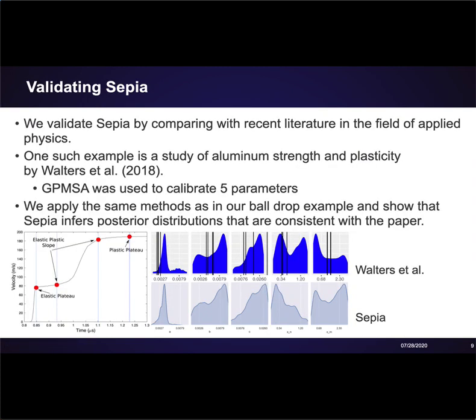While our example shows how well sepia can perform in a simple, one-parameter setting, we would like to be confident of its performance in a more realistic setting with more parameters. We apply the same methodology to a study of aluminum strength and plasticity. In the bottom left plot, we see that the data consists of four velocity-time pairs. The technical details of the data are beyond the scope of this talk, but it's worthwhile to see the structure. The data was analyzed by Walters et al. using GPMSA. This early result of sepia does a reasonably good job at reproducing the posterior distributions from their analysis. The locations of the peaks are consistent, but in the last two distributions we do see some differences. Our MCMC only produced 10,000 samples, while they did 175,000. This is possibly why some of the peaks in our distributions seem to be more or less explored than theirs.